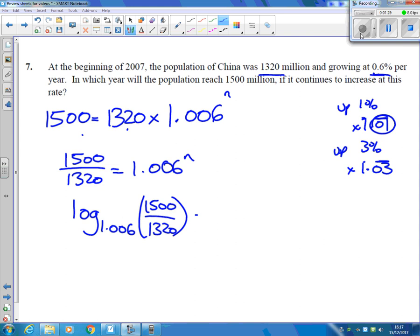That will give the answer of 21.4 years. So it will first pass 1,500 million, 21.4 years after 2007. So if you add that on, that means it's going to pass it in 2028.4. So that's during 2028.